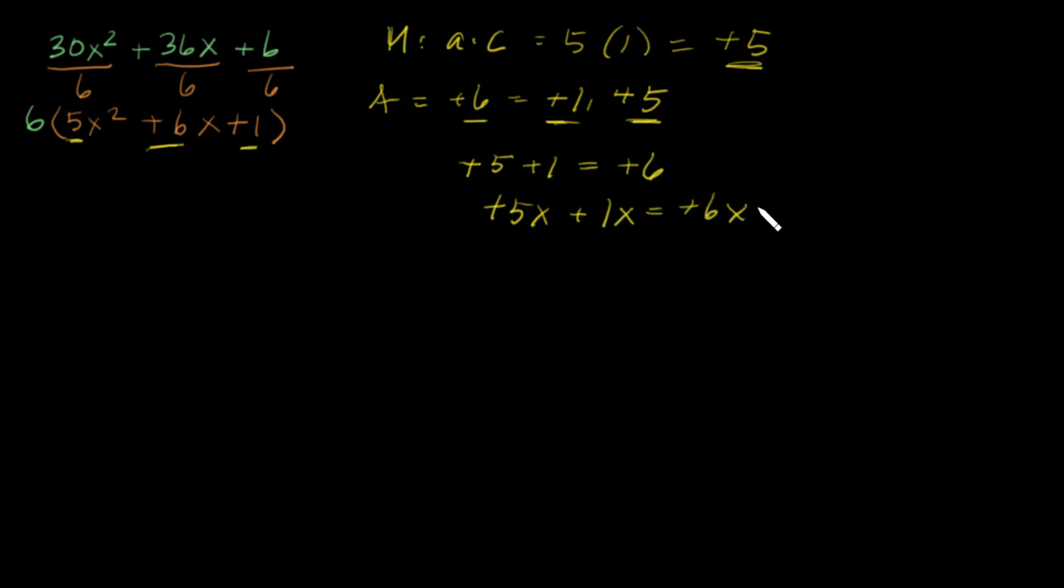And what I'm trying to do is in the original problem right here, the trinomial—I'm going to take these two factors that is the same thing as 6x. I'm going to break that 6x apart and write it as plus 5x and plus 1x.